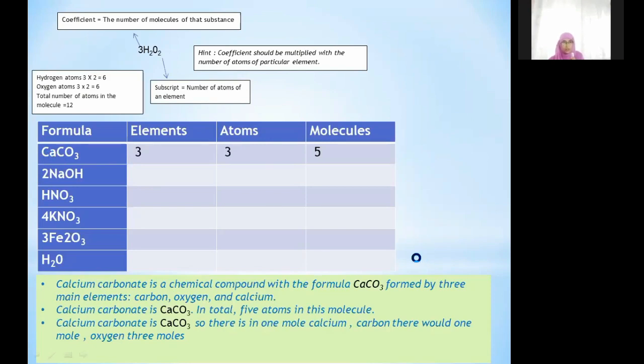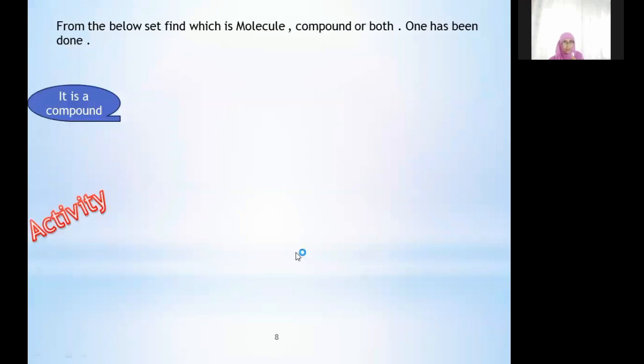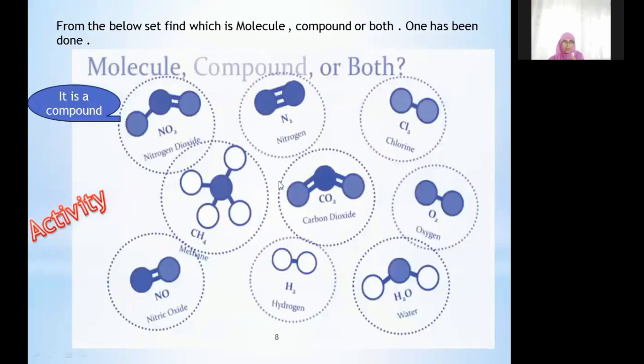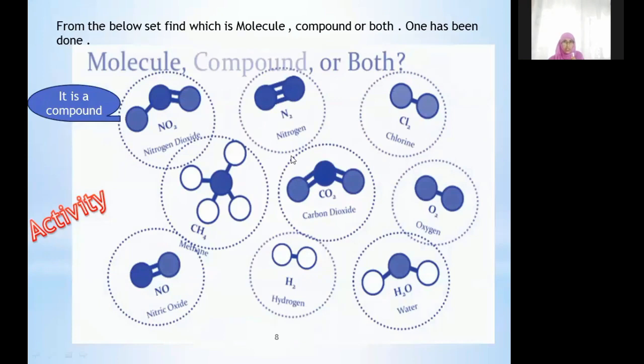Likewise you can find out for the rest. Now here again a small tricky thing to find out whether it is a compound or a molecule. Just use the information just before what we have learned about what is a compound and a molecule. Here one is being done for you. Nitrogen dioxide which shows that it is involving different atoms of element, they are going to combine in a fixed ratio. Likewise you find out for other whether it is an atom, whether it is an atom bonded to a molecule or a compound or both.